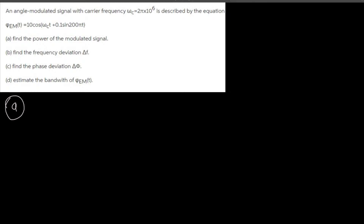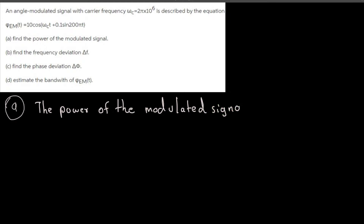For part (a), we need to find the power of the modulated signal. The power is given by P = A²/2. In this case, the amplitude A = 10, so P = 10²/2 = 100/2 = 50 watts.